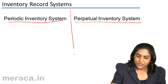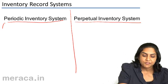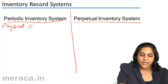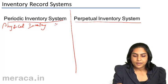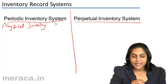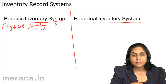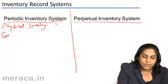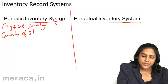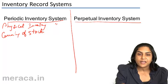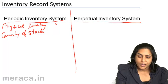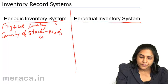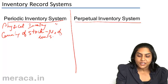Under the periodic inventory system, also known as the physical inventory system, inventory has to be counted physically. This has to be done once a year, and sometimes the exercise may be done twice or thrice a year. So there is physical checking and counting of stock, and we arrive at the number of units. After arriving at the number of units, a value is assigned to these units.